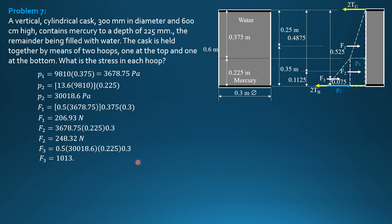Then we sum up moments about the bottom hoop equals 0. So 2 times tension in the upper hoop times 0.6 equals F1. F1 is 206.93. Then its distance 0.35, moment arm.